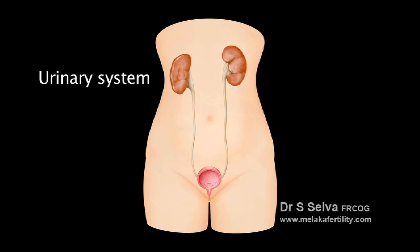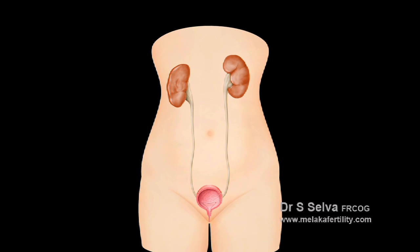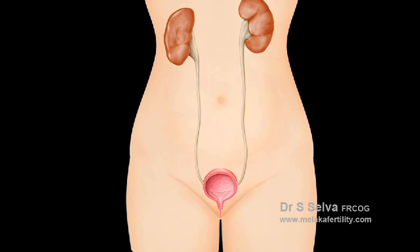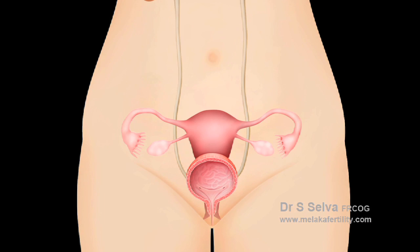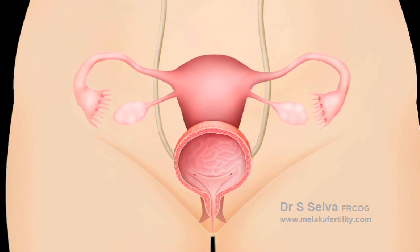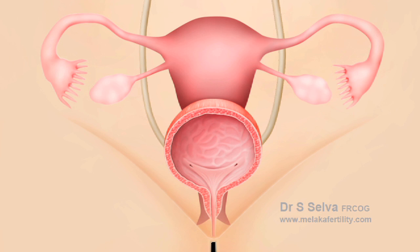This diagram shows the urinary system. The ureters connect the kidneys to the urinary bladder and are found behind the peritoneum on the pelvic side walls. They run below the ovaries and on the side of the cervix, under the uterine arteries, before entering the bladder via the ureteric tunnel. Ureters are important structures to identify during gynecological surgeries.